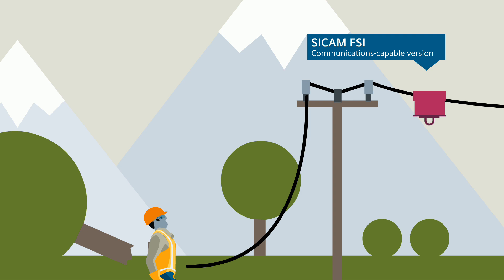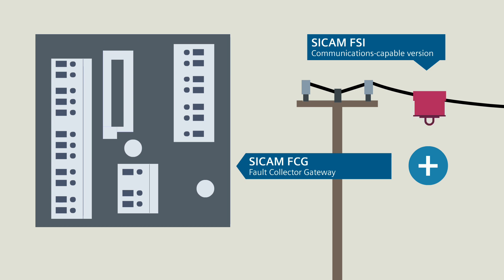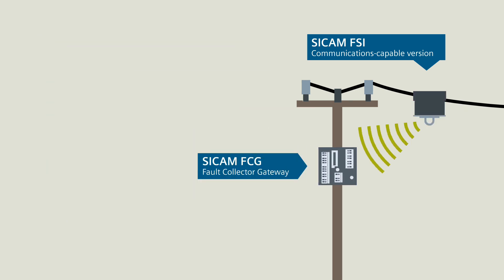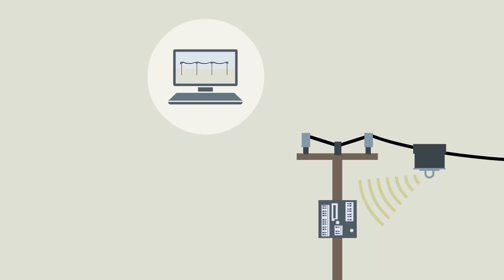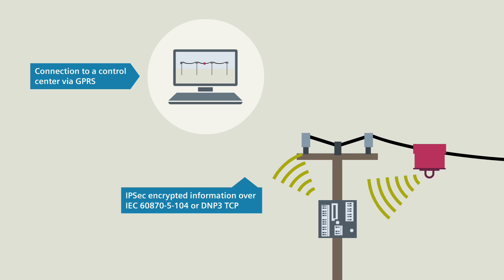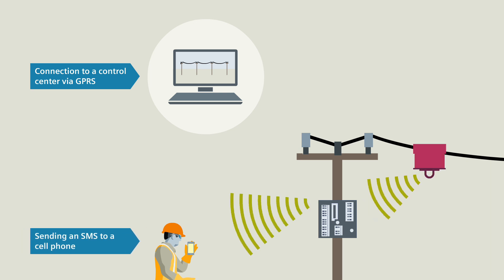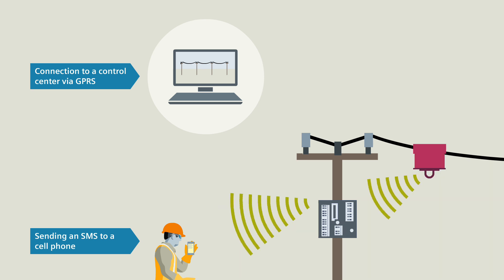Alternatively, you use the communications-capable version of the CCAM FSI in conjunction with a fault collector gateway CCAM FCG. With this solution, the CCAM FSI additionally sends fault information to the CCAM FCG via AES-128 encrypted short-range radio communication. The CCAM FCG then establishes a connection to a higher-level control center via GPRS and transmits the information IPsec encrypted over IEC-104 or DNP3-TCP. In addition, the CCAM FCG can also send an SMS directly to the cell phone of a service technician.